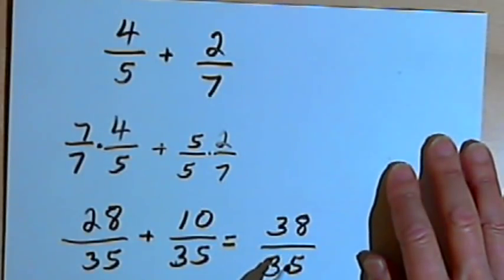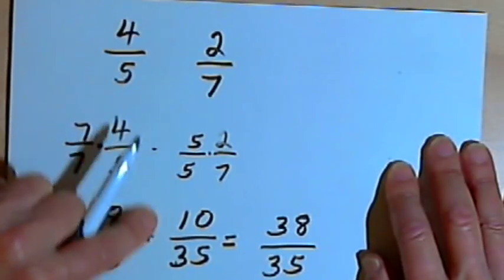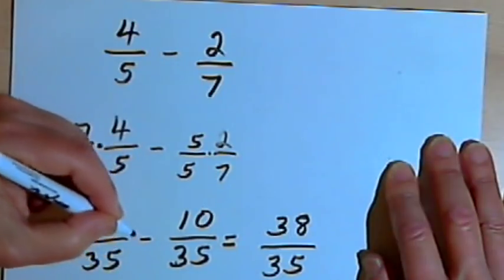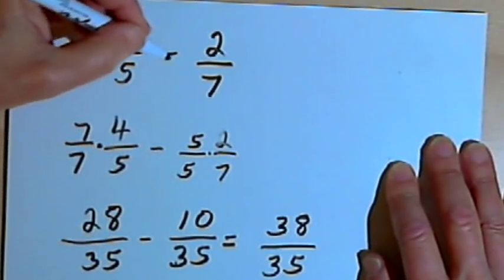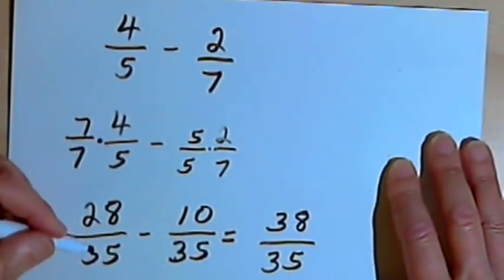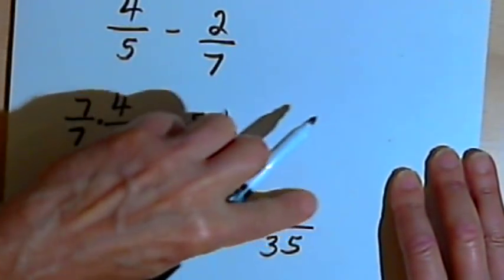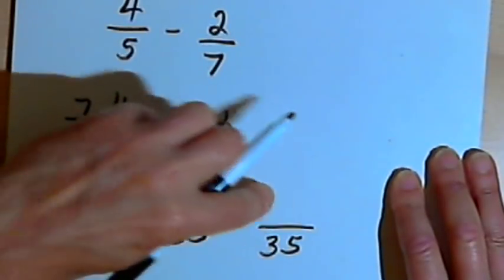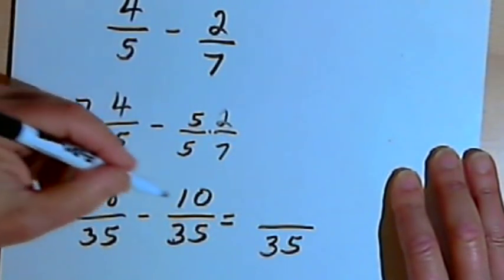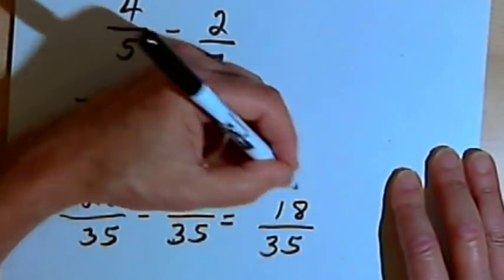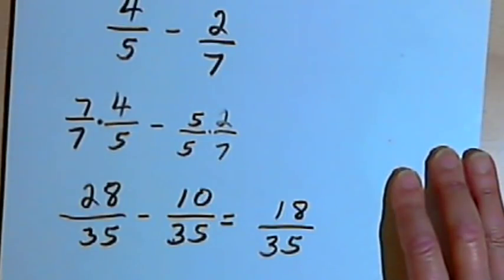Now if you're given a subtraction problem, you're basically going to do the same steps. So let's take all those plus signs and turn them into minus signs. Now I've got 4 over 5 minus 2 over 7. That's going to become 28 over 35 minus 10 over 35. And now all I have to do is subtract the numerators: 28 minus 10 gives me 18 over 35. I can't reduce that either, so that will be my answer.